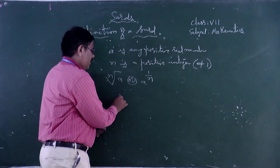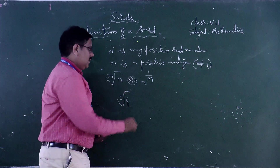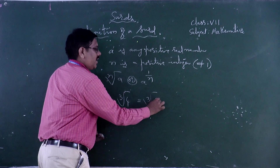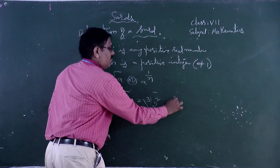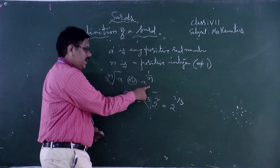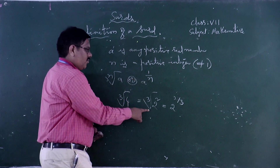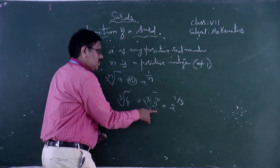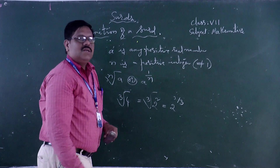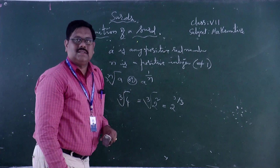For example, if we take cube root of 4, this can be written as cube root of 2 squared, that is 2 to the power of 2 by 3, because N root A is written as A to the power of 1 by N. So cube root of 4 equals 2 to the power of 2 by 3, which is not a rational number. Therefore, we can call cube root of 4 a surd.